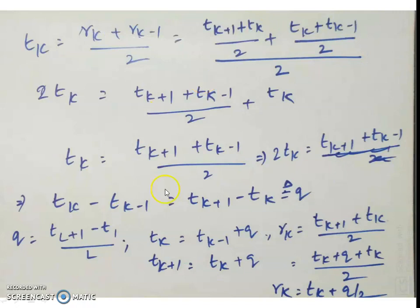The quantization step is uniform — all transition levels are separated by the same quantization step, and all reconstruction levels are also equally separated. That is why this particular quantizer is called a uniform quantizer. It is also called a uniform quantizer because the probability density function is uniform.